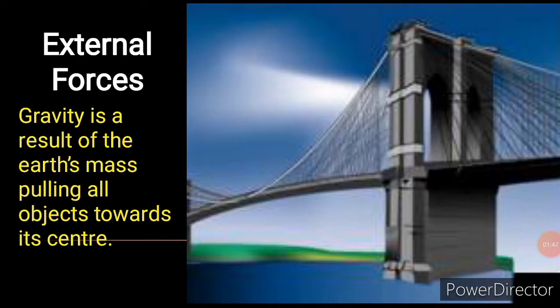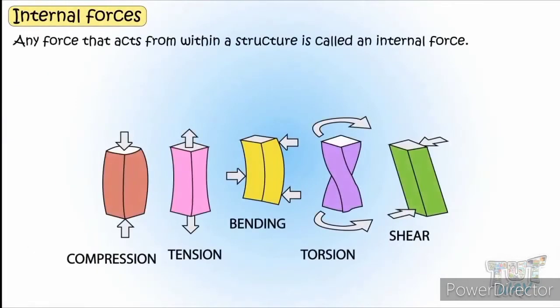One major external force is gravity. Gravity affects an object because of its weight, so the more the weight of an object, the more the gravity. As you move higher from earth toward space, gravity also decreases. Gravity is a force that pulls objects toward the center of the earth — any object that goes up must come down because of gravity.